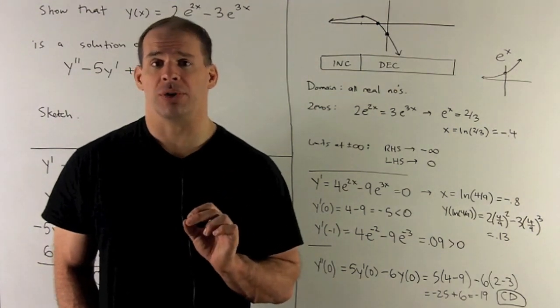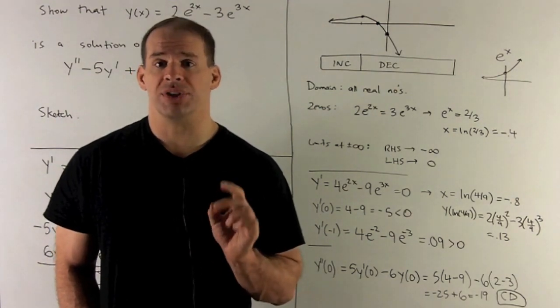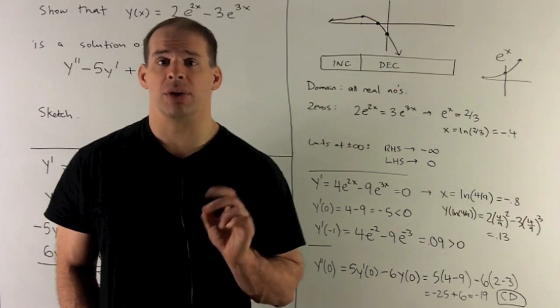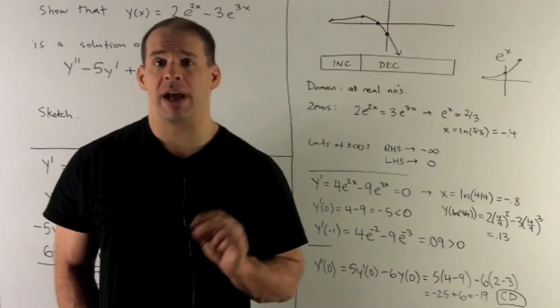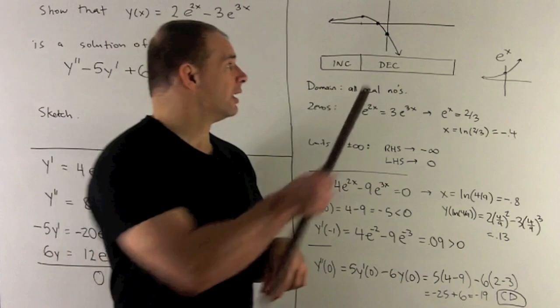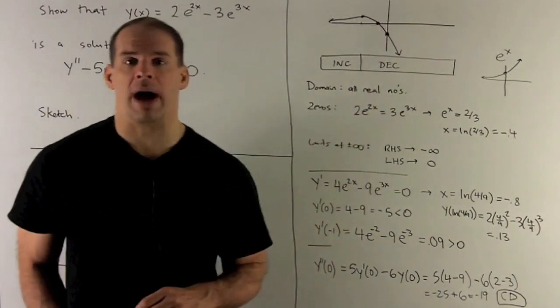Next, let's put some points on the graph. So if I put zero into our function, we have e^0 = 1, so we get 2 - 3 gives me -1, and that gives me this point on the y-axis.